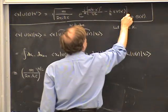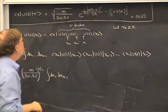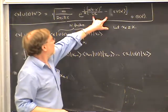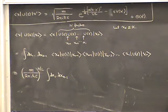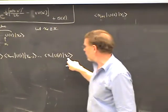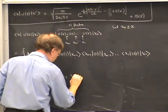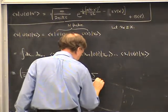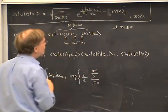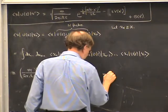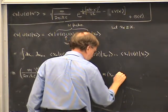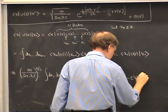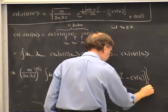Factoring out i over ℏ, the exponent becomes the sum from j equals 0 to N minus 1 of: M times (X_{j+1} minus X_j) squared over 2ε, minus ε times V evaluated at X_j. That's the complete expression that appears in the exponent — it's a discretized version of a Riemann sum.